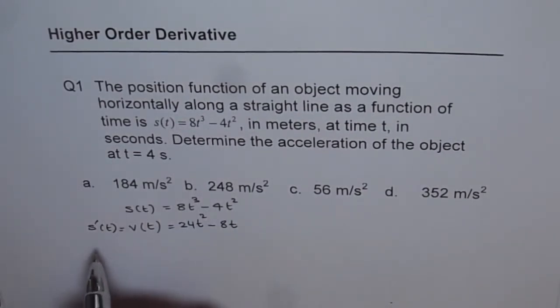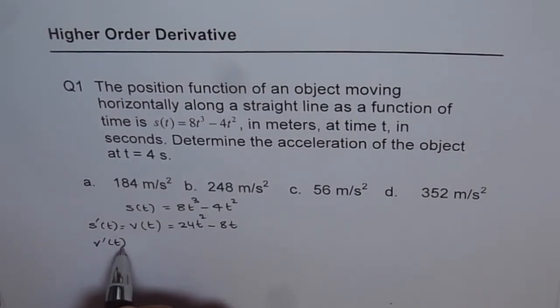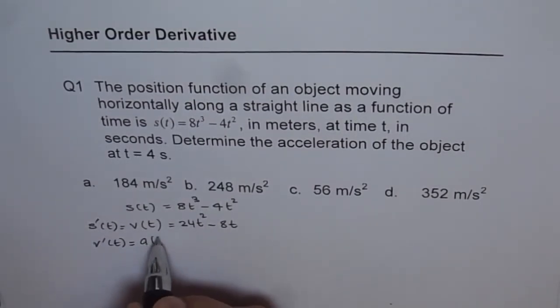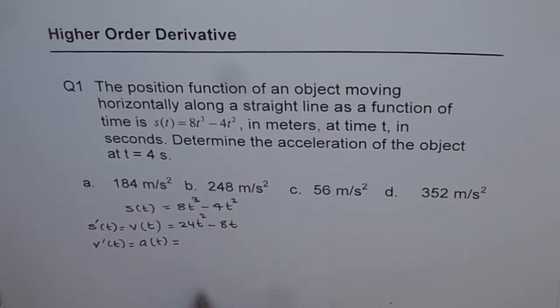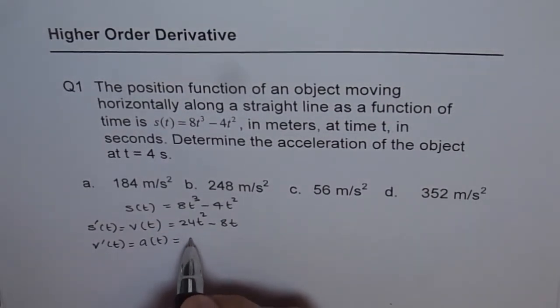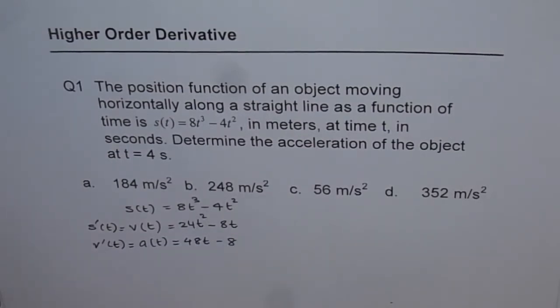And now acceleration is the derivative of velocity. So v'(t) will be acceleration at any instance of time t. So that will be 48t minus 8. So that is an expression for acceleration.